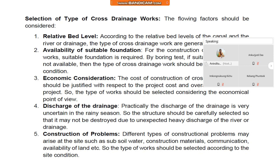Number five, construction problems. Different types of construction problems may arise at the site, such as subsoil water, construction materials, communication, availability of land, etc. The type of work should be selected according to the site condition.